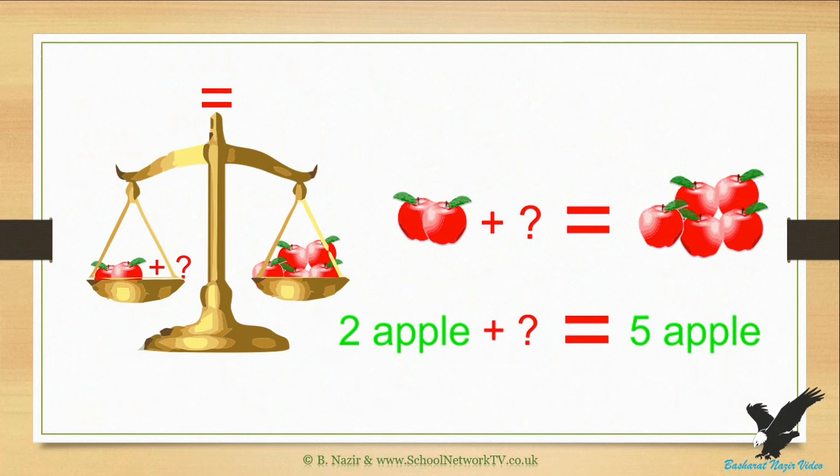The scales can be missed out because the equal sign tells us that both sides must be balanced. On the right of this diagram we have replaced the scales by an equation. We have on the left two apples and on the right we have five apples, so both sides are not equal. To balance both sides we have to add three apples to the left side.